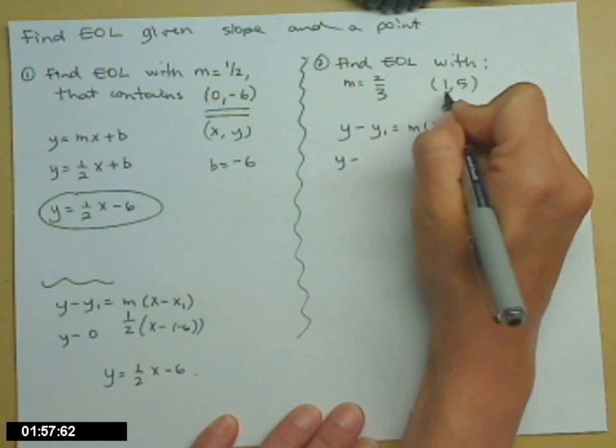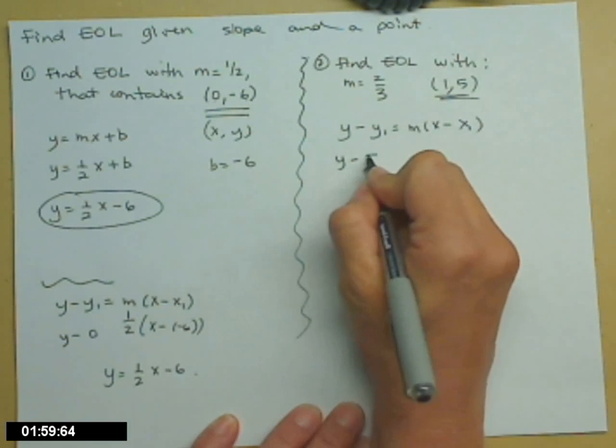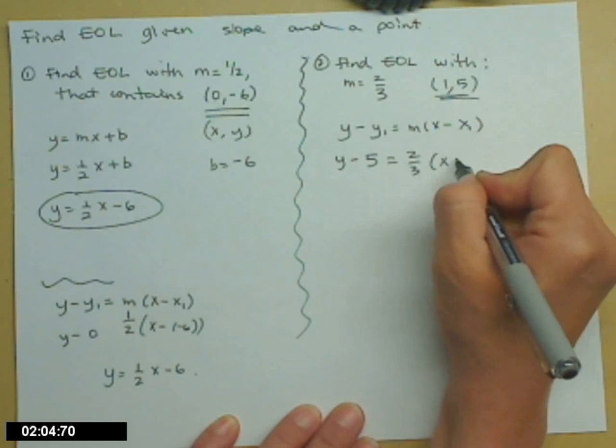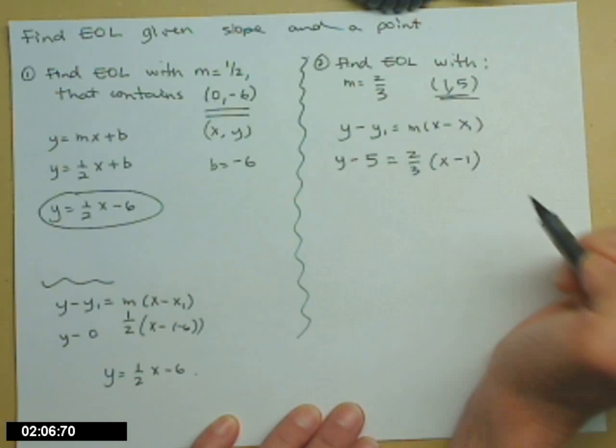y minus y₁—that's from the point—so y minus 5 equals m, which is 2/3, times x minus x₁, which is 1.